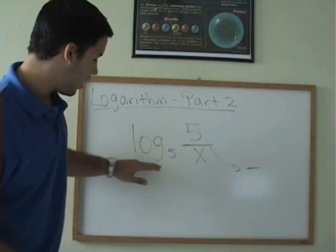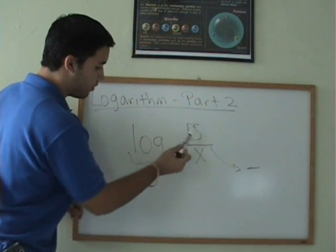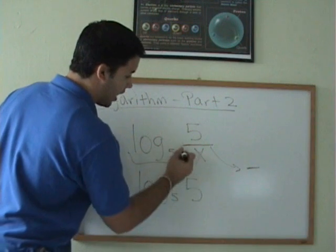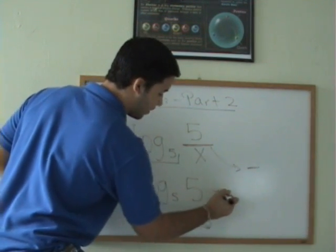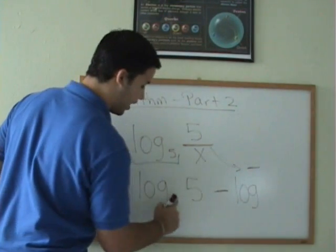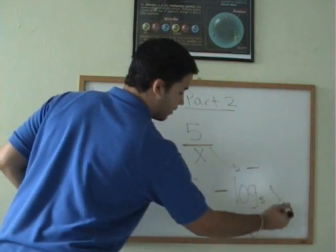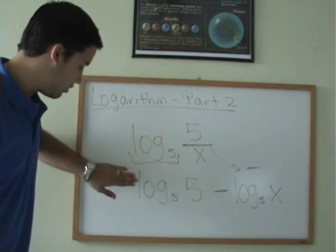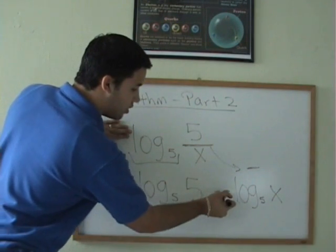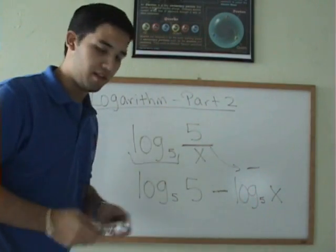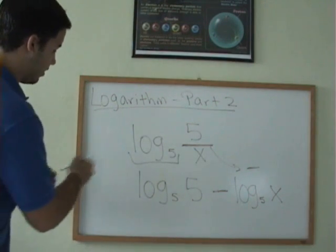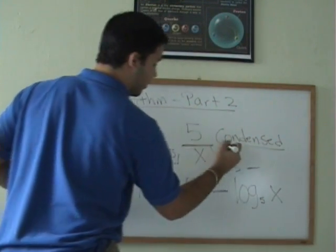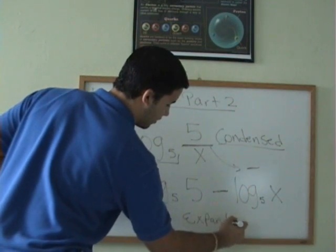The logarithmic base always stays the same, so you're going to rewrite it for both numbers. You're going to say log with base 5 of 5, and because this is division, you're going to use the minus sign. You're going to rewrite log with base 5 of x. This is how you expand this logarithm. The opposite is when you go from the expanded form to the condensed form. Whenever you see a minus sign you use division, and whenever you see a division sign you use a minus sign. This form is called the condensed form, and this form is called the expanded form.